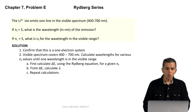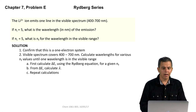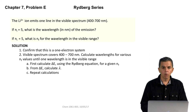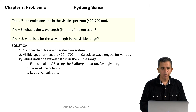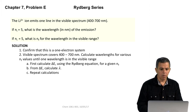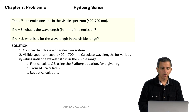To solve this problem, we will first confirm that this is a one-electron system. We will then consider that the visible spectrum covers from 400 to 700 nanometers and calculate wavelengths for various possible n final values combined with n initial equals 5, until we find one wavelength that is in the visible range. This second step requires an iteration: first calculate delta E using the Rydberg equation for a given n final value, then calculate the corresponding wavelength, and repeat until we find a value in the visible range.